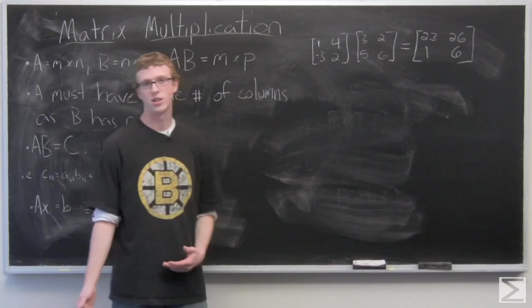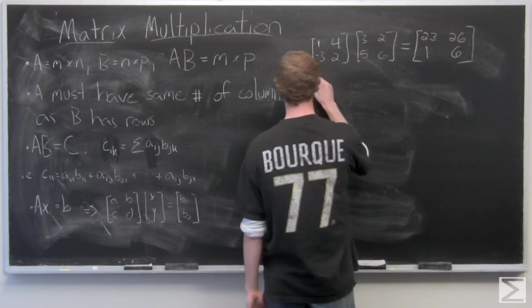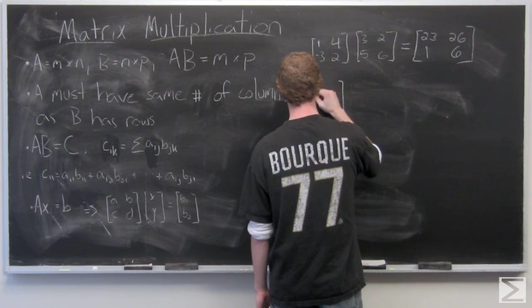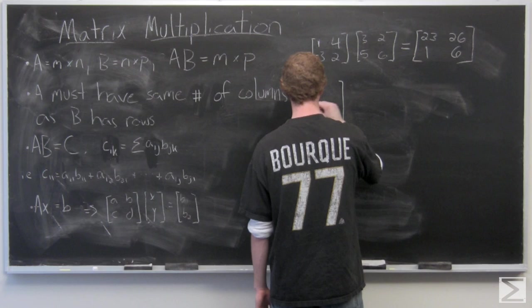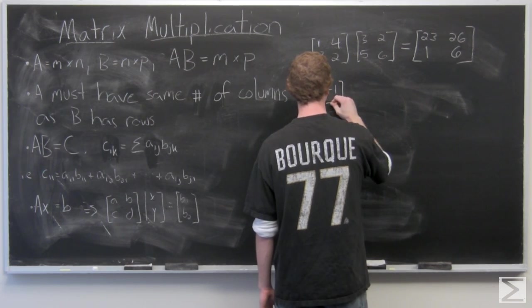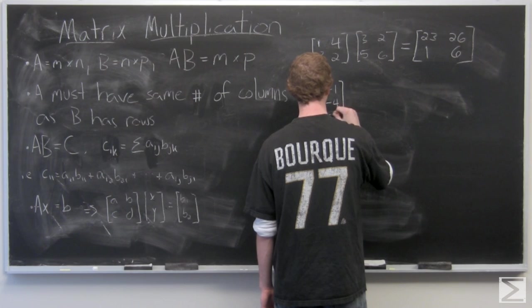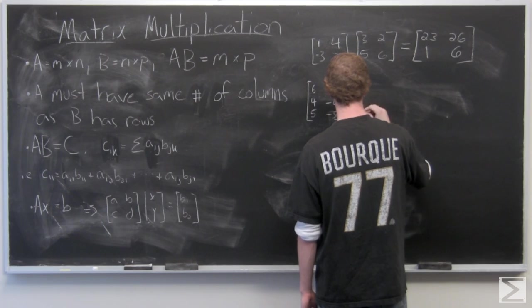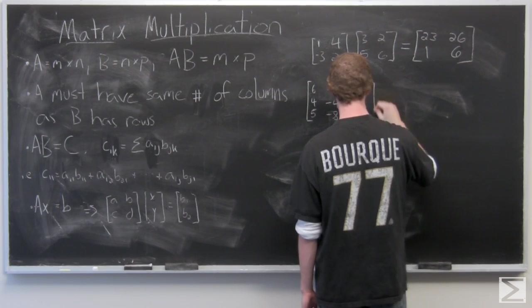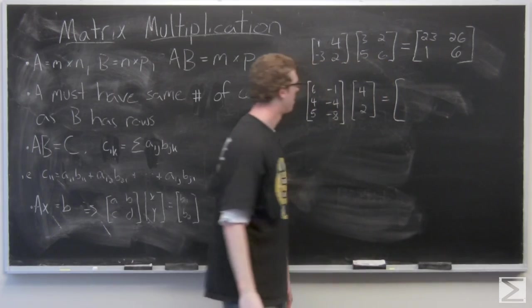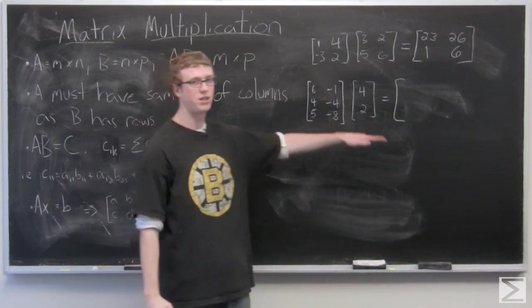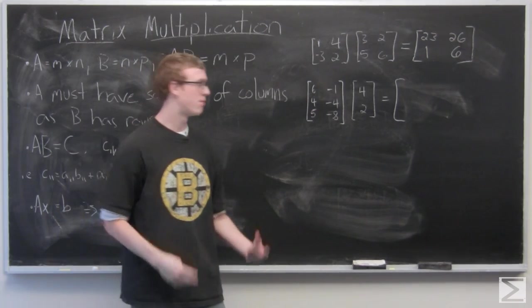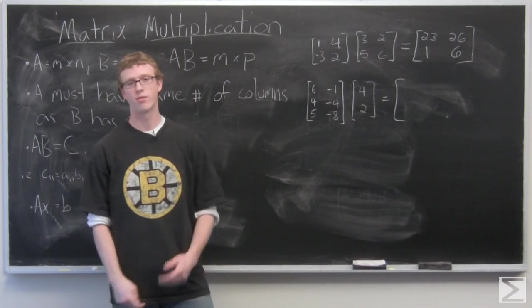But now let's take a look at an example with some different size matrices. Let's say a 3x2 and a 2x1. So we have a 3x2 and a 2x1. So 3 times 2, 2 times 1. We can multiply these matrices together and it's going to result in a 3x1 matrix.